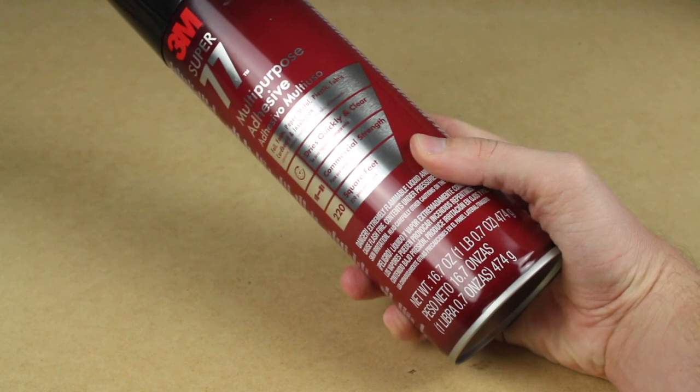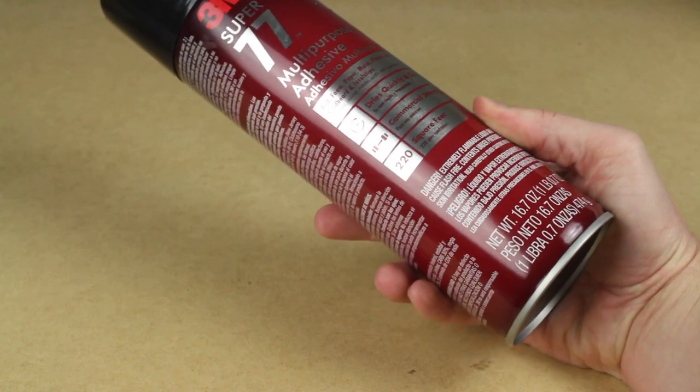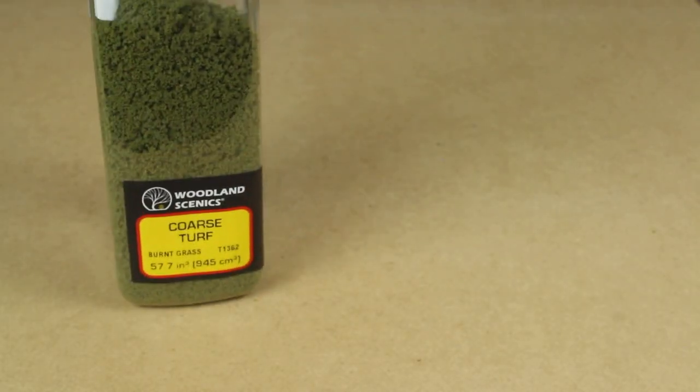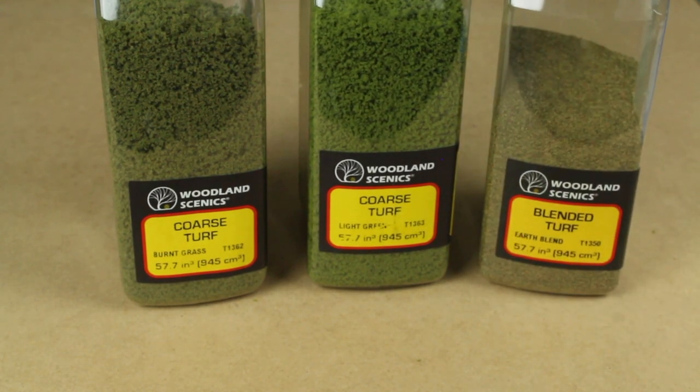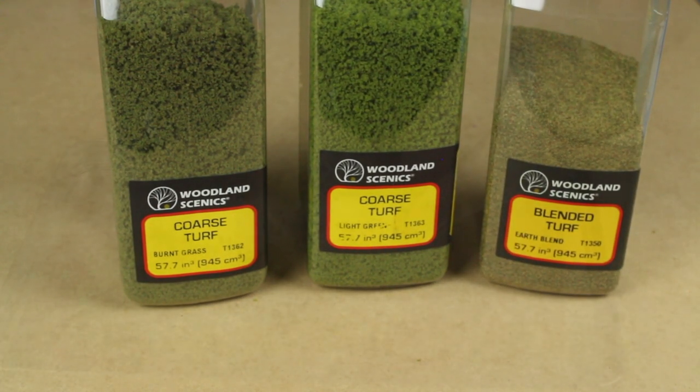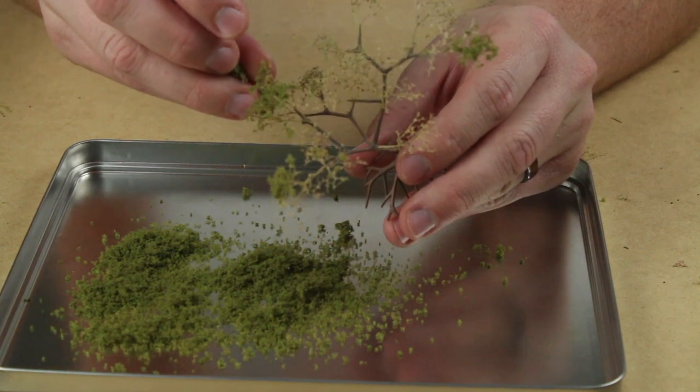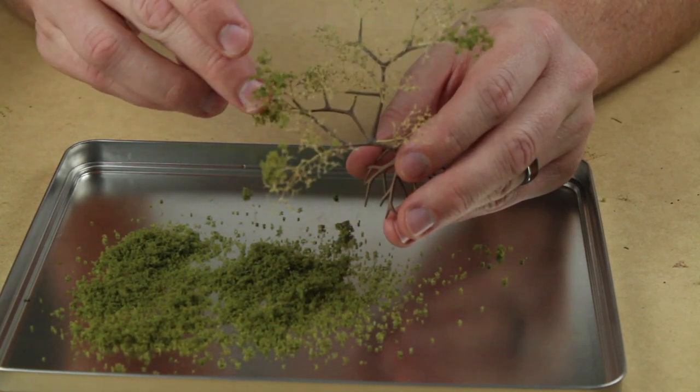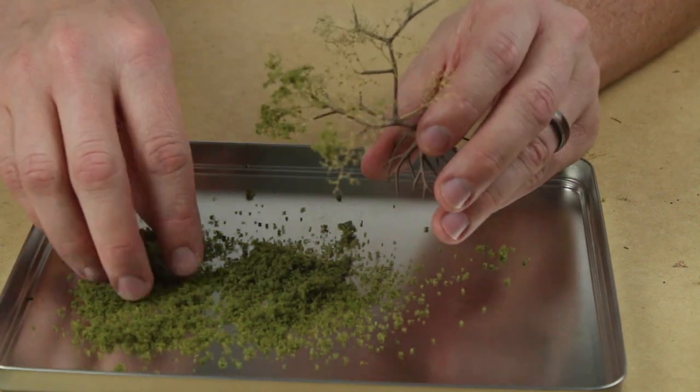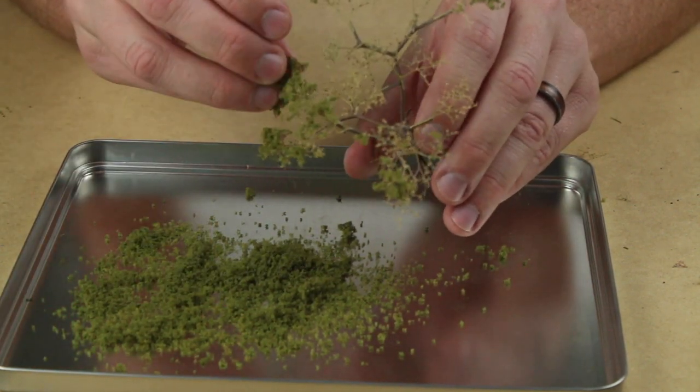To create the leaves, a spray adhesive was used to attach a variety of Woodland Scenics foam turf products. To ensure that it dries clear, the spray adhesive was very lightly applied to the ends of the branches. The foam turf was then gently pressed into place. This process can be repeated several times to gradually build up the volume of the canopy.